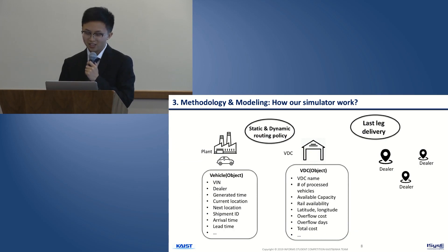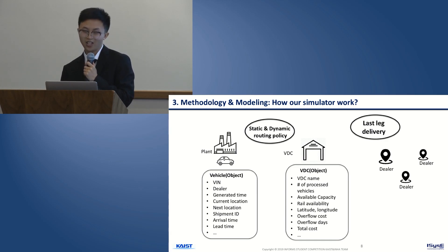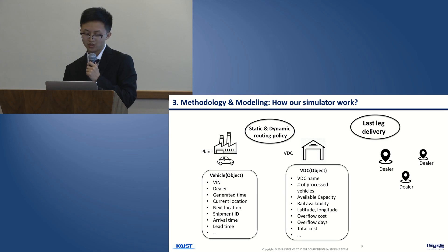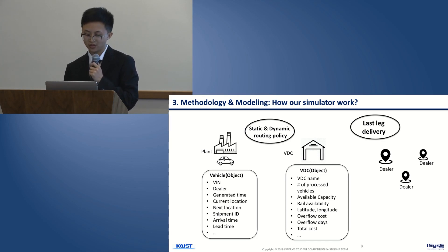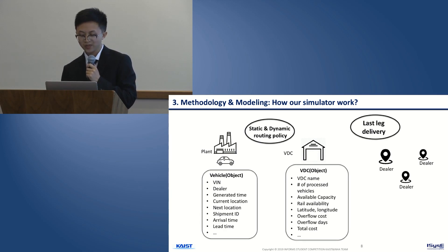SimPy doesn't provide a graphic interface like other commercial simulation software, so let's take a closer look at how our model works. 44 VDC objects were generated by a VDC generator as soon as the simulation starts, and each VDC has many labels designed by us manually to collect the information we are interested in. Similarly, vehicles are generated by a vehicle generator following the arriving plane time of finished vehicles. Each vehicle also has many labels, which we use to record the logistic costs of each part during the vehicle delivery process. During simulation, information in the labels is calculated and refreshed, and after the simulation ends we get the output.